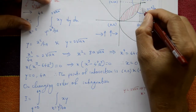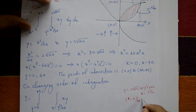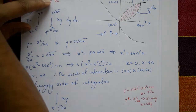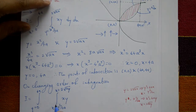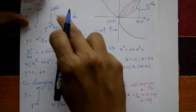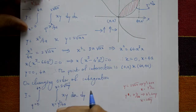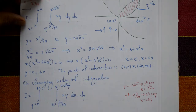The right curve comes from x squared equals 4ay, giving x equals 2 times square root of ay. So after changing the order, x runs from y squared by 4a to 2 times square root of ay. This change of order of integration is the main important step; the integration after this is straightforward.